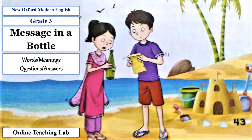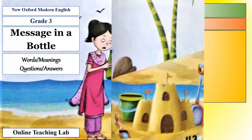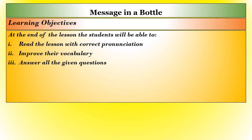Dear students, today the topic of our lesson is Message in a Bottle. It is Unit No. 5 in New Oxford Modern English Grade 3. This story has been written by Nicholas Hasberg. The learning objectives of this lesson: at the end of the lesson, the students will be able to read the lesson with correct pronunciation, to improve their vocabulary, and to answer all the given questions.